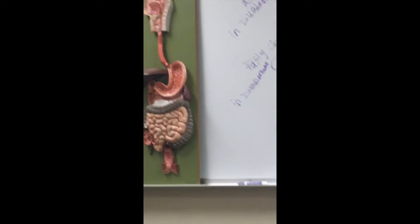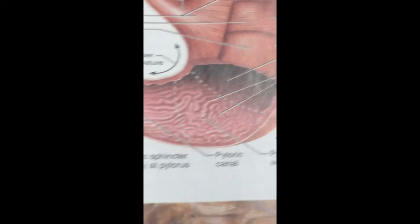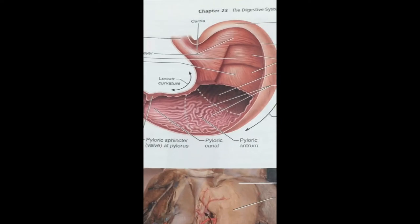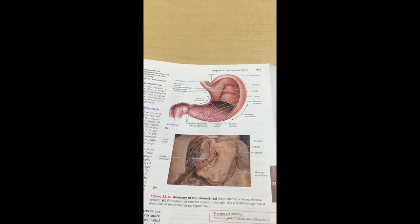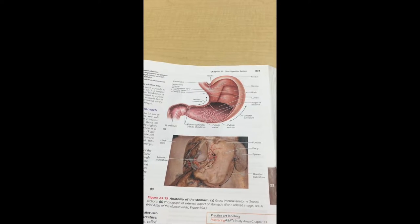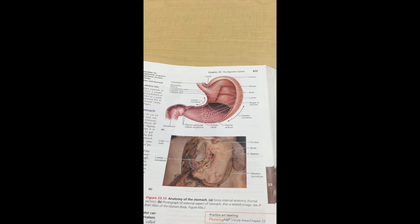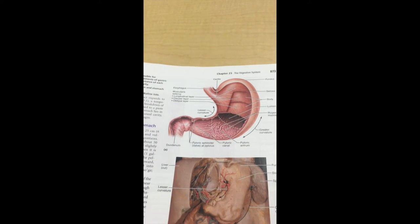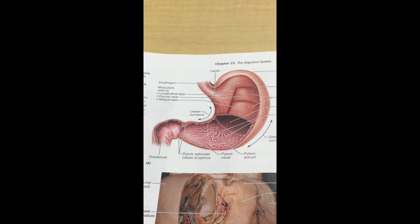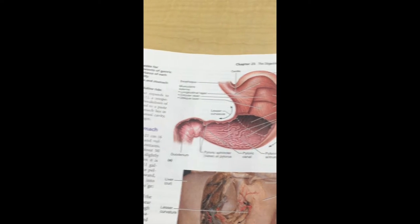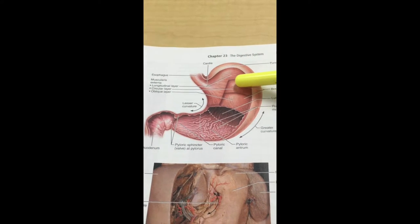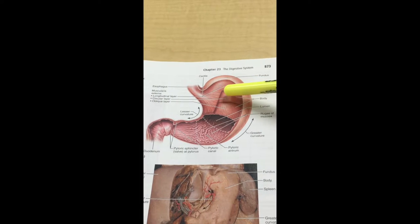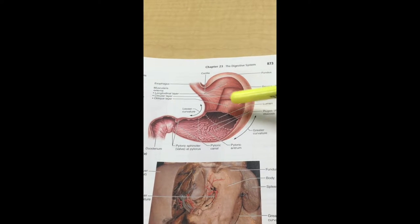The greater omentum is a membrane that attaches the stomach to the organs that surround it. The mesocolon attaches the large intestine to the parietal peritoneum, and the lesser omentum attaches to the liver. The muscularis externa has a longitudinal layer, a circular layer, and an oblique layer. Longitudinal runs up and down, circular runs in a circle, and oblique runs at an angle or diagonal. All these help to mush up and mix up food.